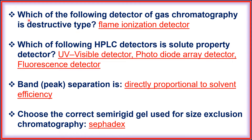Which detector of gas chromatography is a destructive type? That is the flame ionization detector. Which HPLC detectors are solute property detectors? That is the UV-visible detector, photodiode array detector, and fluorescence detector.